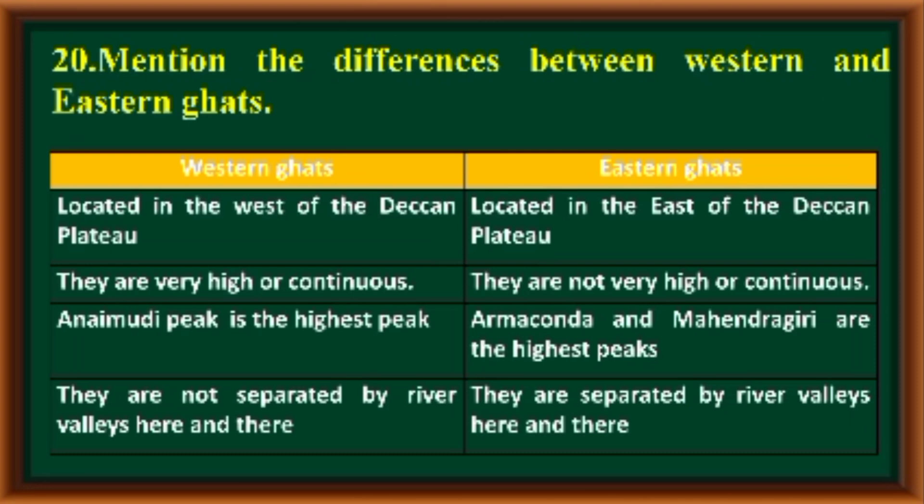Mention the differences between Western and Eastern Ghats. Western Ghats are located in the west of the Deccan Plateau — they are very high and continuous, and Anaimudi Peak is the highest peak. Eastern Ghats are located in the east of the Deccan Plateau — they are not very high or continuous, Arma Konda and Mahendragiri are the highest peaks, and they are separated by river valleys here and there.